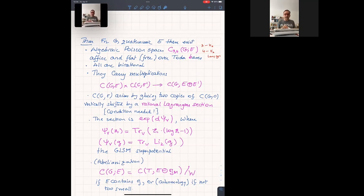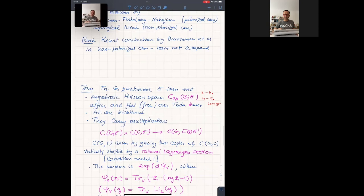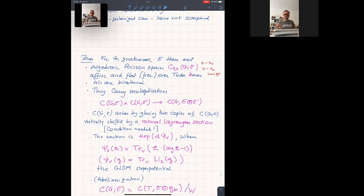All right. So there are algebraic Poisson spaces, which are affine and flat. In fact, free as modules over the Toda basis. So when E is zero, it is the total space of a total integral system. They're all birational to each other. All the fibers are Lagrangian, I should have said that. There are compatible multiplications. You can multiply two spaces into the one for the direct sum of representations. Somehow what you're building from E is something multiplicative. So it converts addition to multiplication.